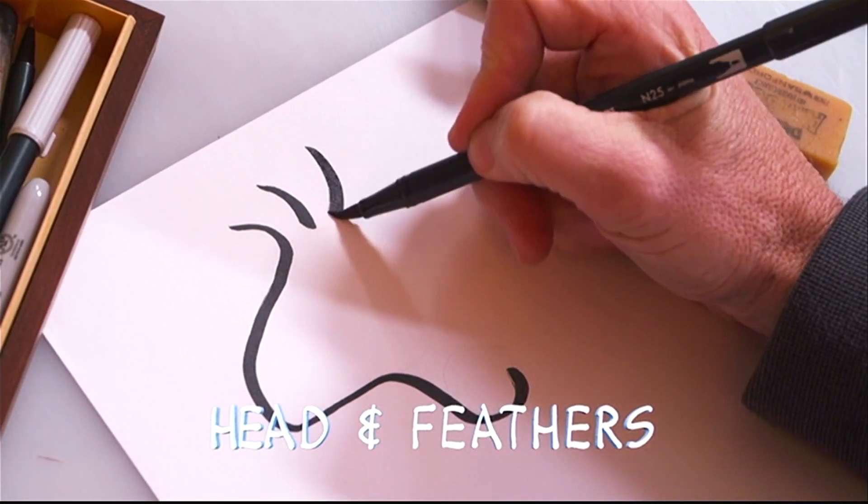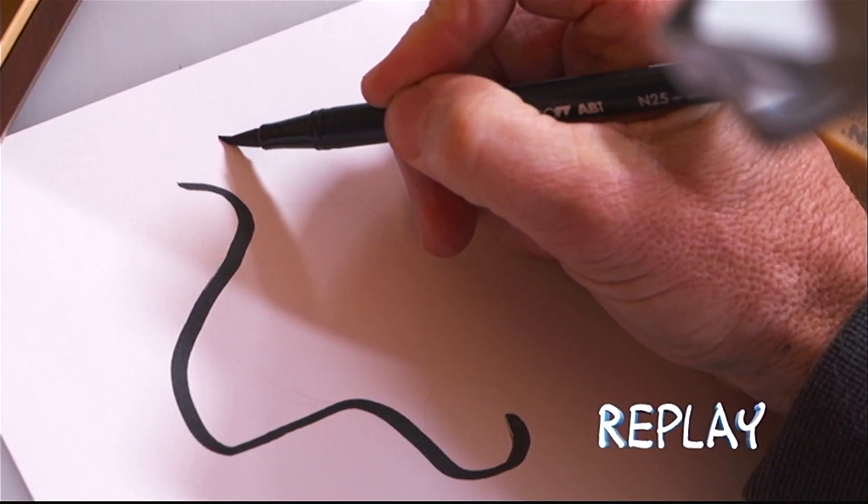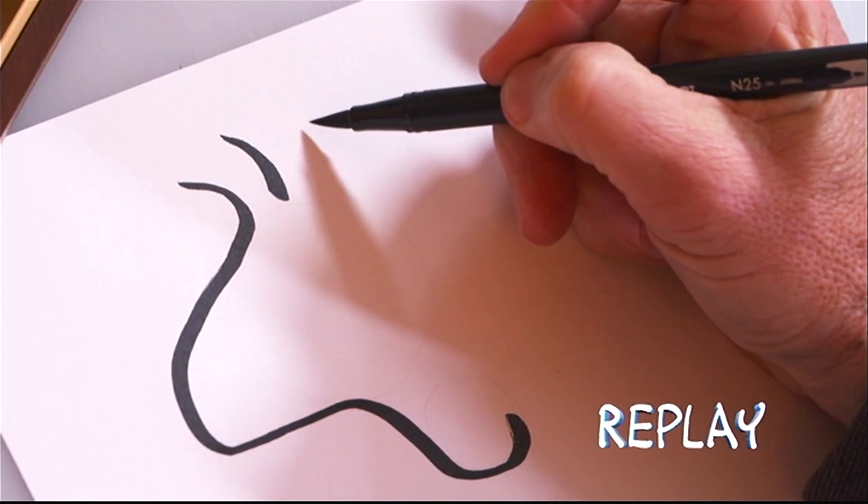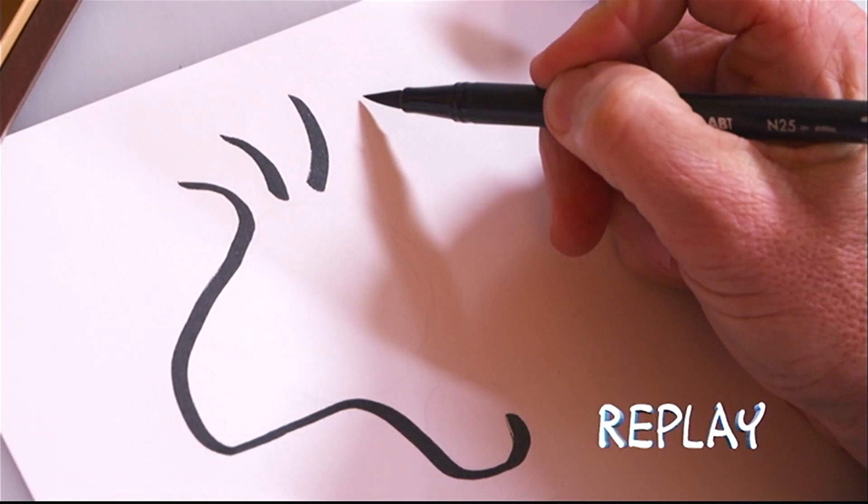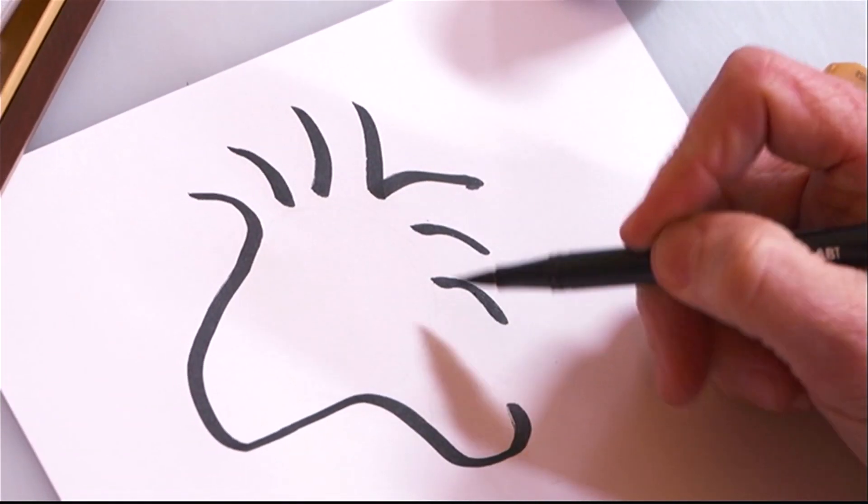Proportions are key. Woodstock's head and feathers make up about half of Woodstock. Watch this replay carefully to draw Woodstock's head and feathers. And remember to use bold lines.